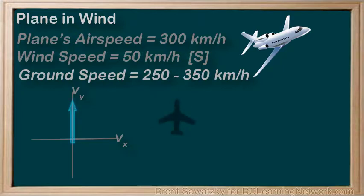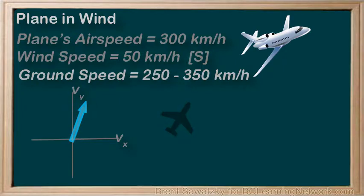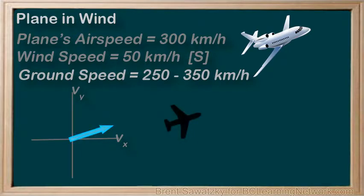If the plane is heading north, the north-south component of the velocity, Vy, is 250 kilometers per hour. As we change the angle, the west-east component of the velocity, Vx, grows, and Vy shrinks. If we are aimed at going straight east, Vy shrinks to zero and our Vx component is at a maximum — the full airspeed of the plane is being used to get us east. In this case, Vx would be 300 kilometers per hour.